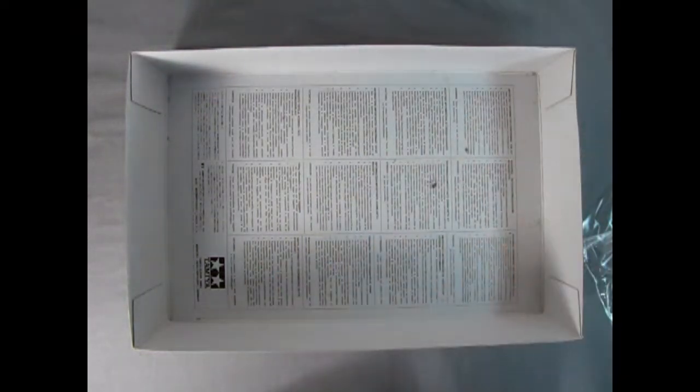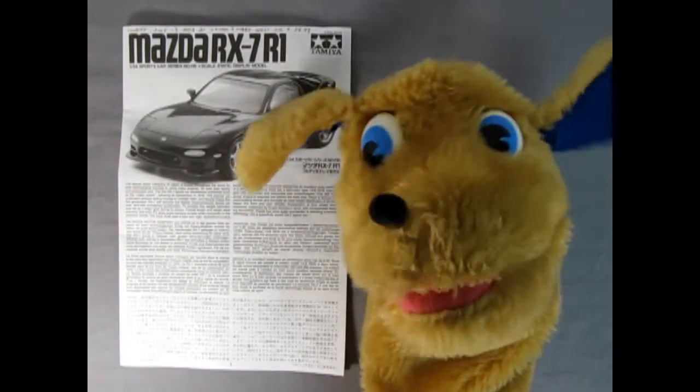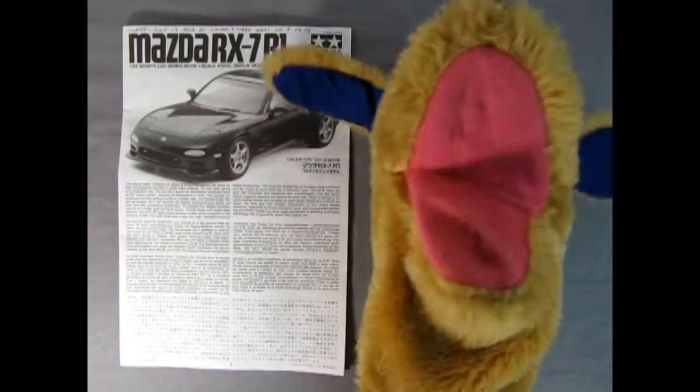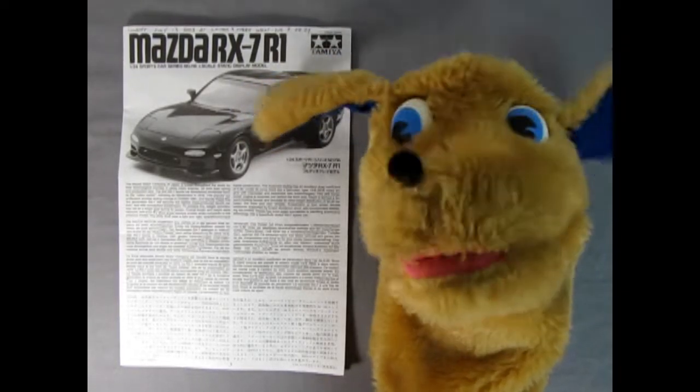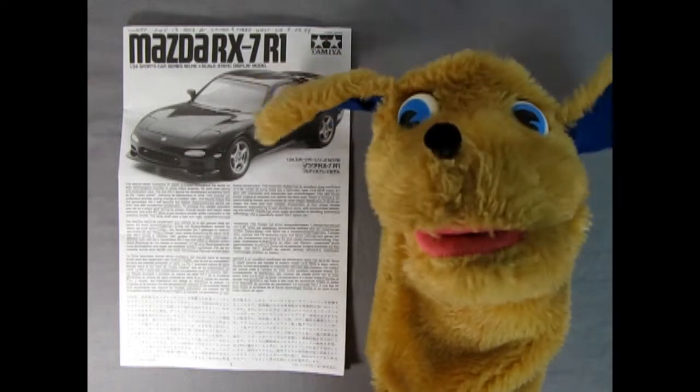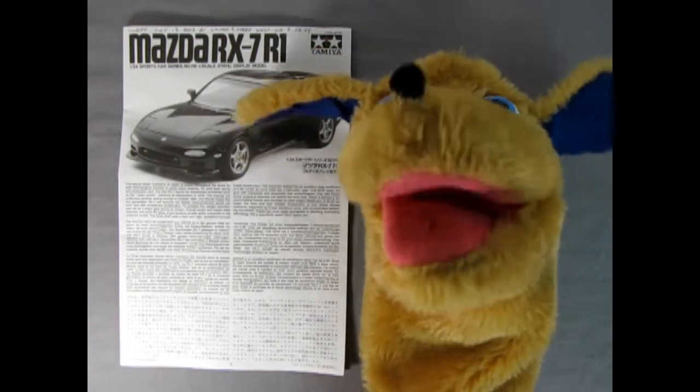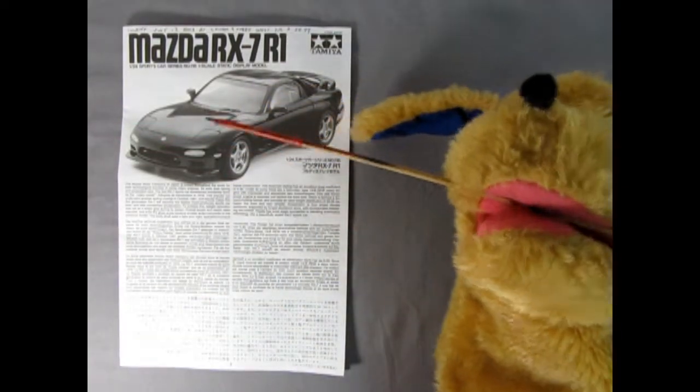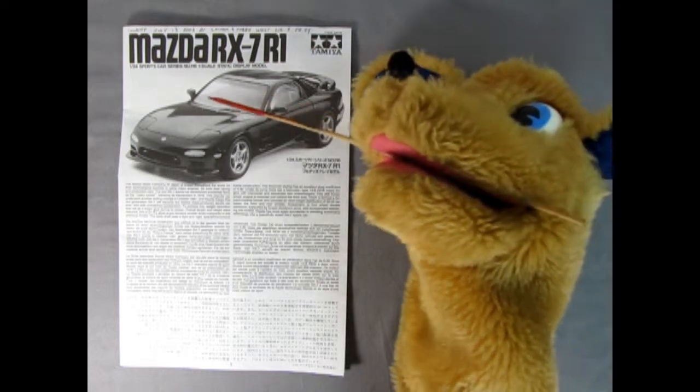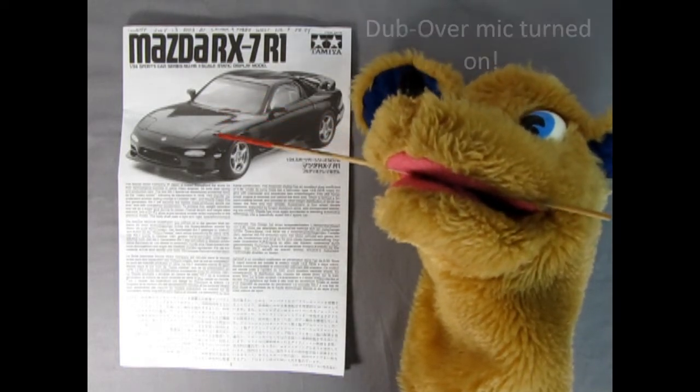So let's move this out of the way and let Danny the dog take a look at those instructions. Hello everybody! This is Danny the dog, star model car reporter here. Just to let you know all the info on our Mazda RX-7 R1 instruction sheet. So I'm gonna just get the pointer in my mouth here and then we'll use the dub over mic so that you know what I'm saying. Okay! Here we have the Mazda, oh yeah! Turn on the overdub mic. Alright!